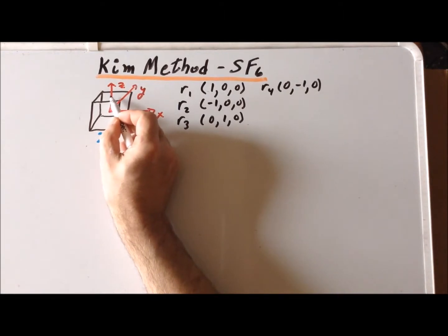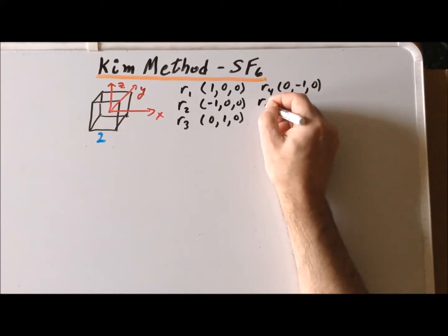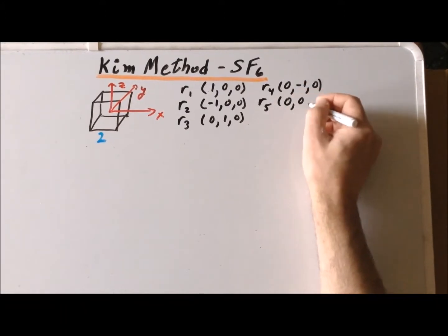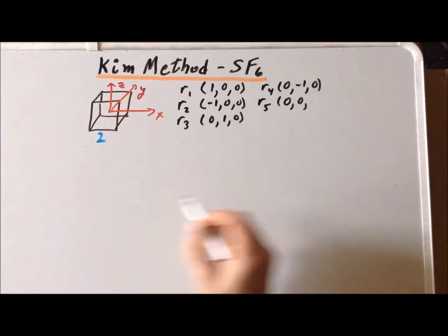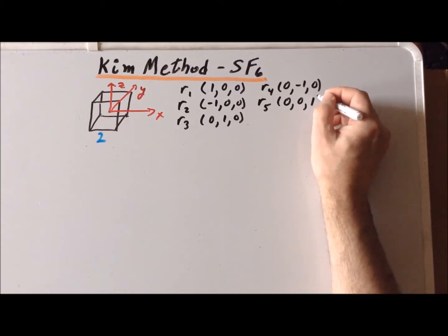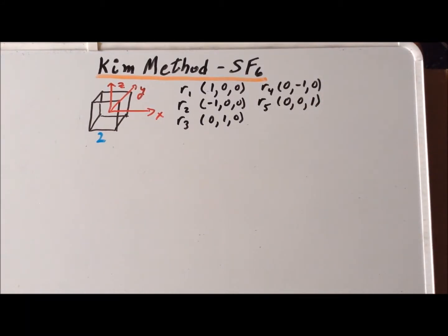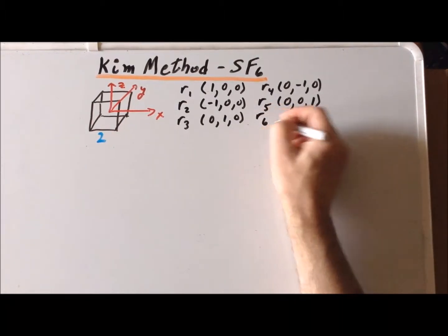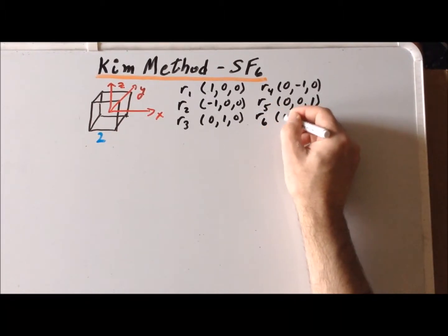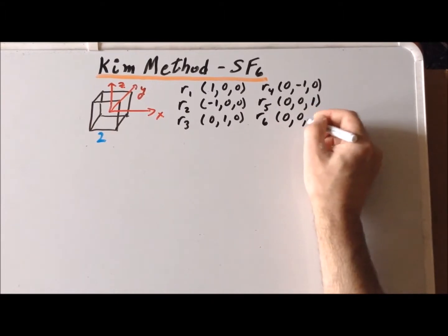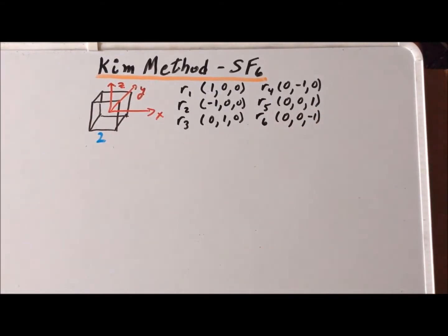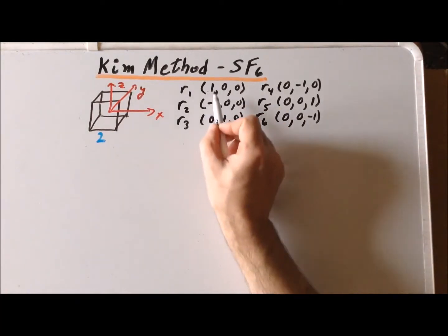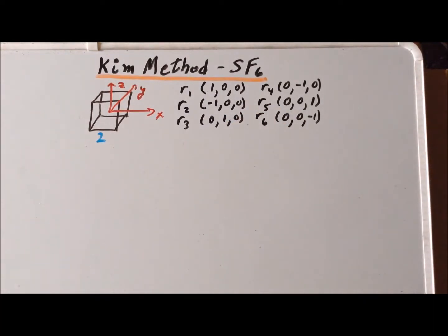The fifth fluorine atom is at the center of the top face of the cube. So that gives its x and y coordinates to be 0, but it has a z-component of 1. Last but not least, we'll have a fluorine atom at the center of the bottom face, R6, and its coordinates will be (0, 0, -1). Notice that the only non-zero coordinates we ever have are either +1 or -1.